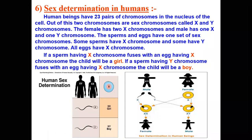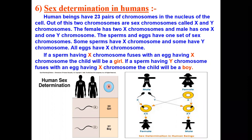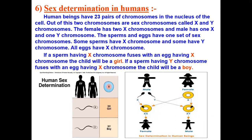Hello students, today we will continue chapter number 10, reaching the age of adolescence. Before starting the new concept, let's recap what we have already discussed in the last videos. Earlier we had discussed about puberty and adolescence, and in another video we had discussed the changes occurring at the age of puberty. After that we discussed about the endocrine glands and the reproductive phase of life in humans.